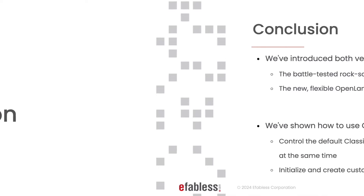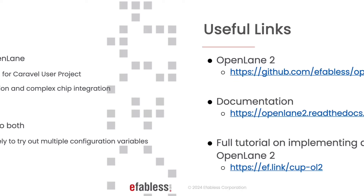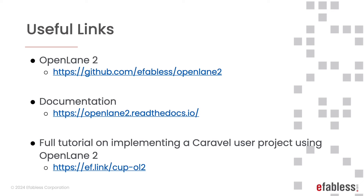To conclude: we've introduced both versions of OpenLane — the battle-tested, rock-solid OpenLane 1 for careful user projects, and the new flexible OpenLane 2 for education and complex chip integration. We've shown how to use OpenLane 2 to control the default Classic flow effectively, try out multiple configuration variables at the same time, and initialize and create custom flows. Here are some useful links: the OpenLane 2 repository, the documentation for OpenLane 2, and a full tutorial on implementing the careful user project using OpenLane 2.